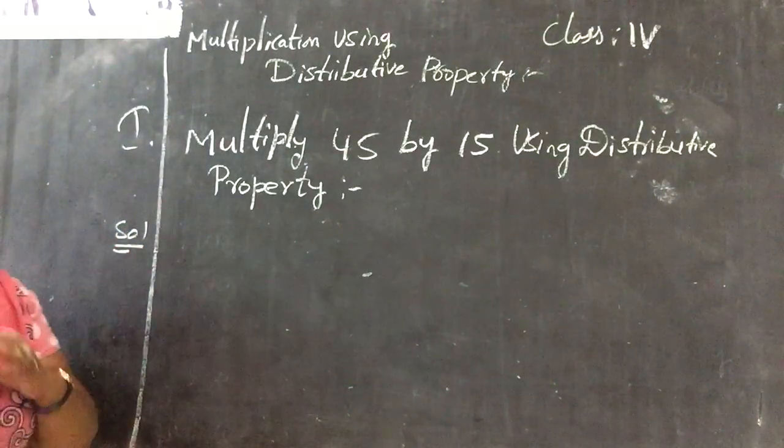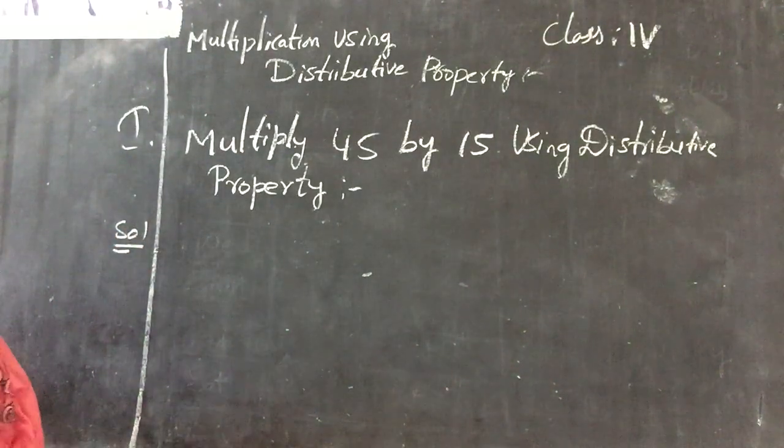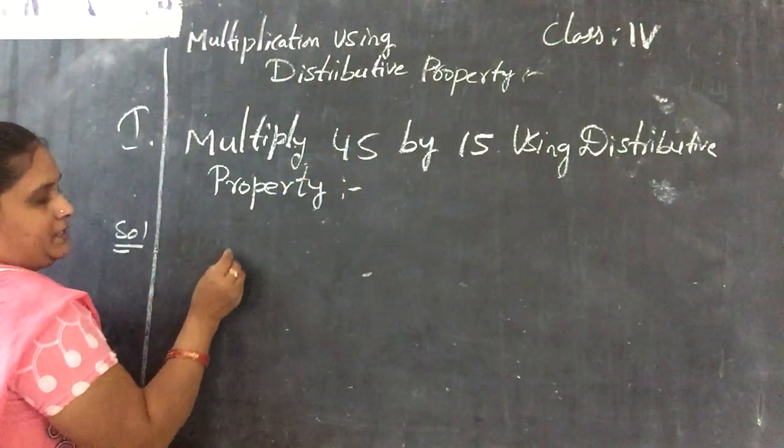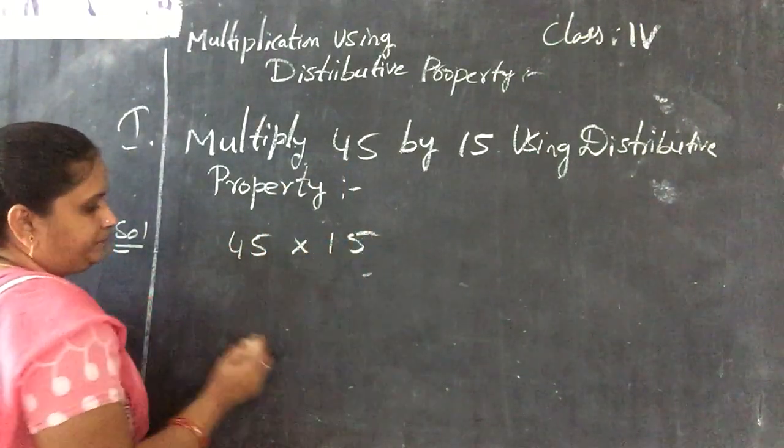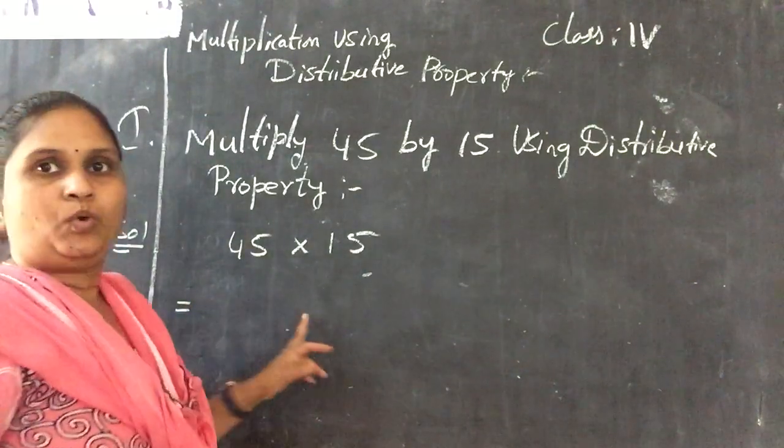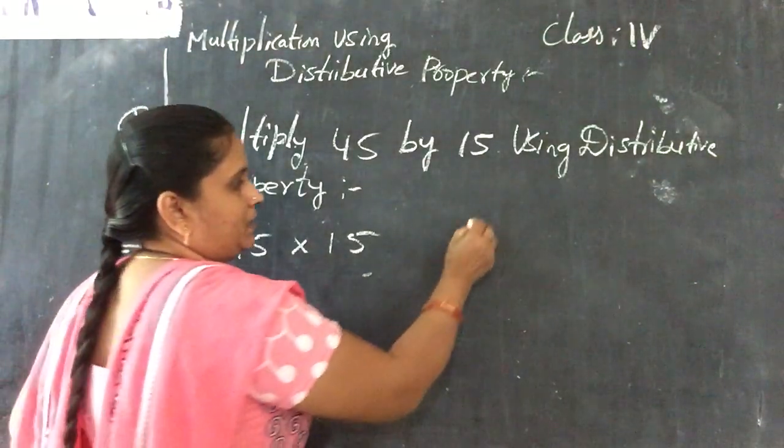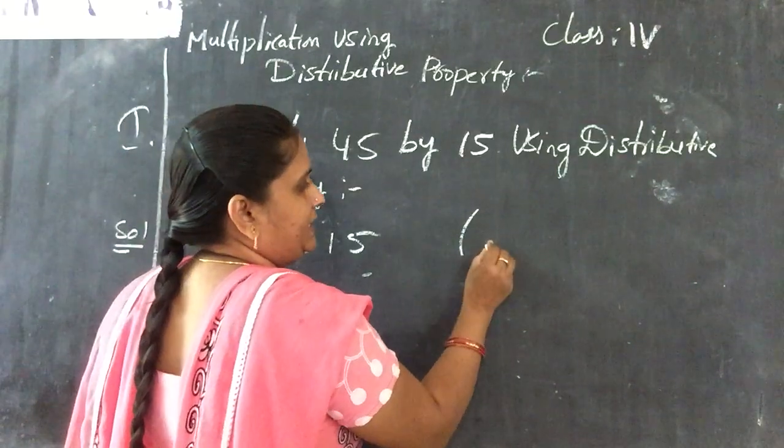Multiply 45 by 15 using distributive property. First one. How to do this one? So first what you have to do is 45 into 15.